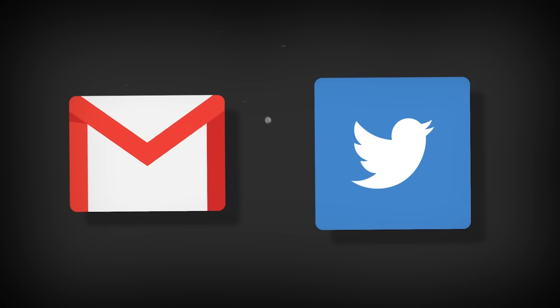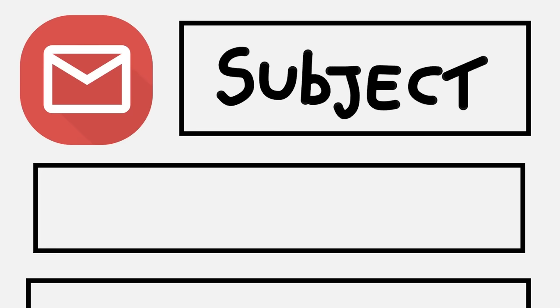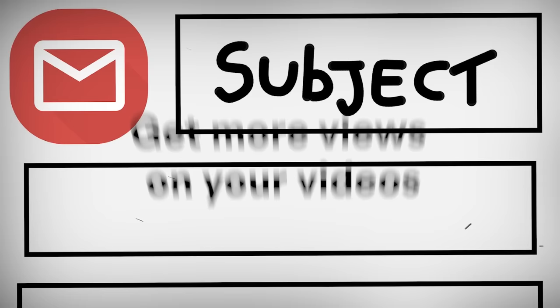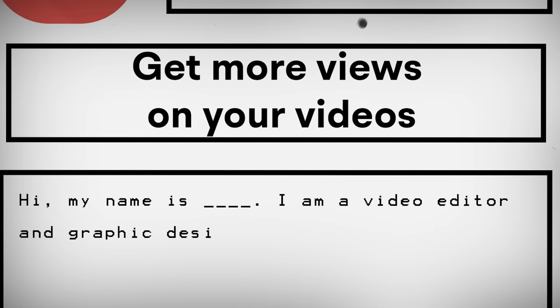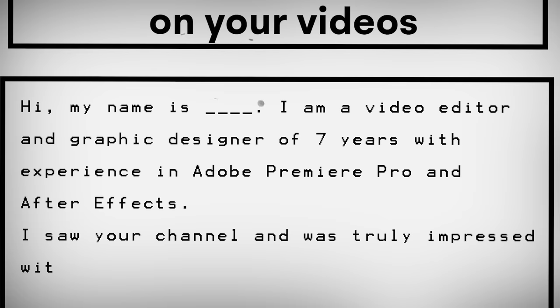Most people either reach out through email or Twitter DMs, which, don't get me wrong, is totally fine. If it's an email, the subject line will usually be something like 'video editor,' 'professional video editing services,' or something like 'get more views on your videos.' And then the body of the email will go something like this: Hi, my name is whatever. I'm a video editor and graphic designer of 7 years with experience in Adobe Premiere Pro and After Effects.